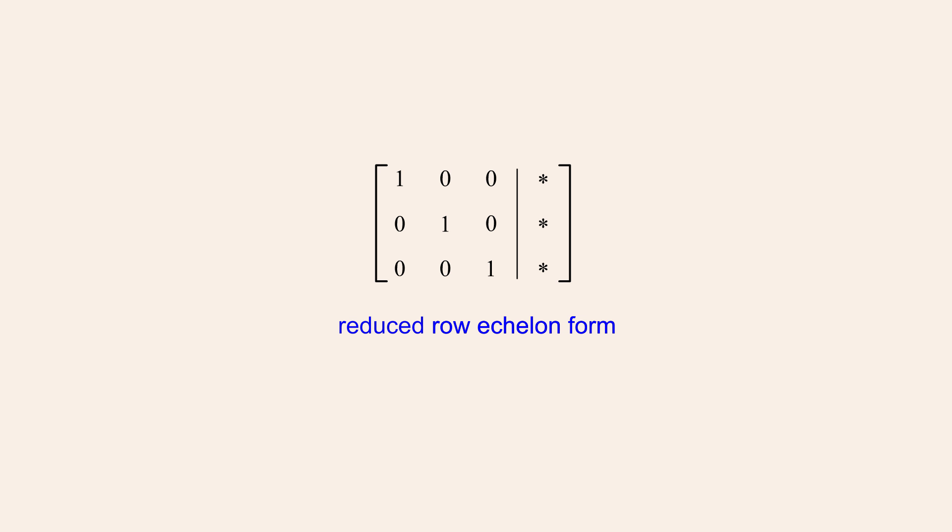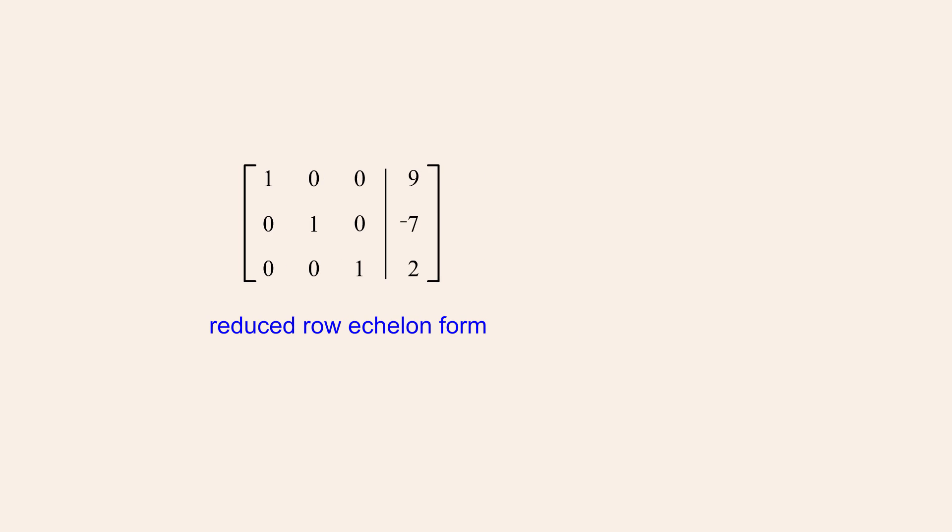An augmented matrix in this form always represents a system of equations with a single unique solution. For example, this matrix corresponds to a system of equations with the solution 9, negative 7, 2. This form of augmented matrix always results in a single unique solution since each equation in the system equates one variable to a constant.